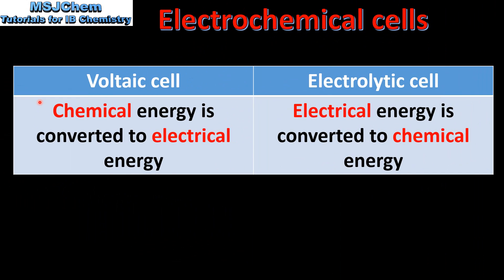Next we look at the type of energy change. In a voltaic cell chemical energy is converted to electrical energy. In an electrolytic cell electrical energy is converted to chemical energy.